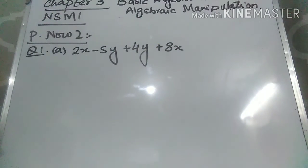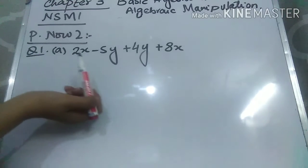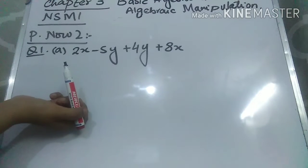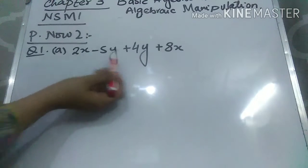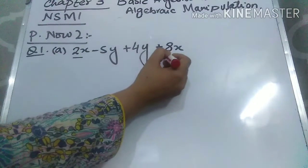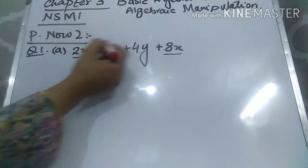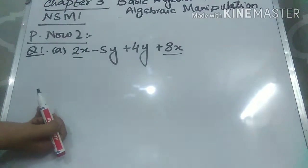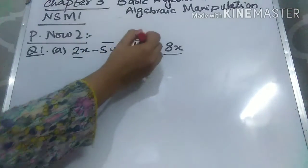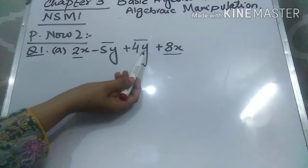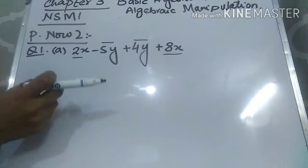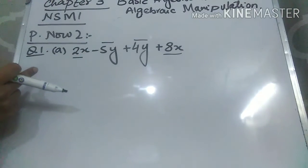Remember that whenever you have an expression with different variables, you have to solve the like terms together. Like terms are those terms which have the same variables. Here you can see that 2x and 8x are both X terms — both coefficients have the same variable X. So these are like terms. And 5y and 4y both have the same variable Y, so these two are also like terms.